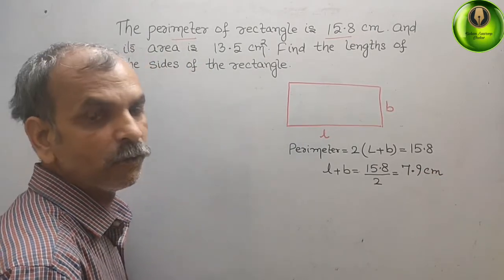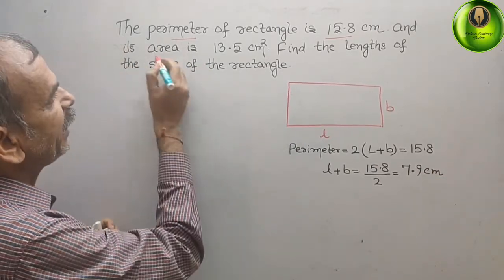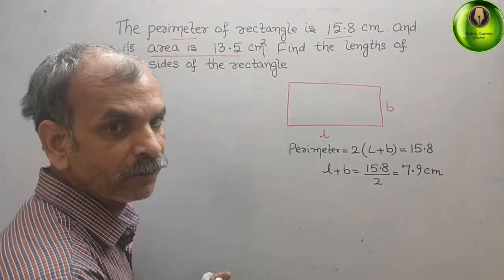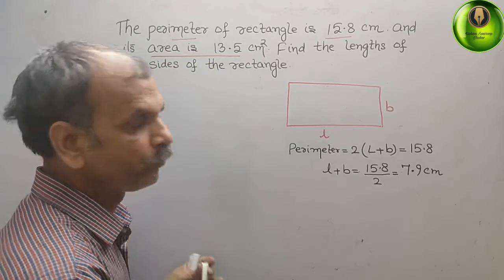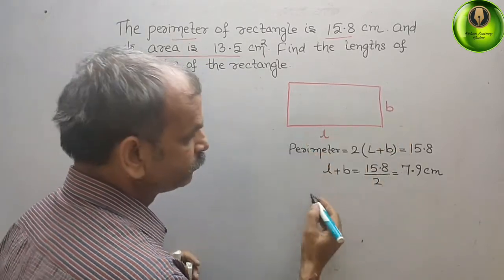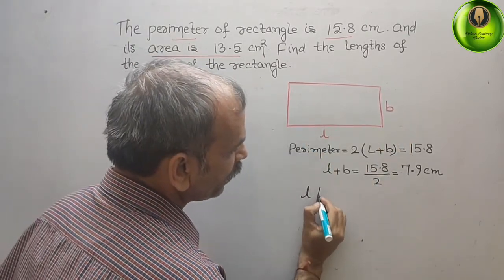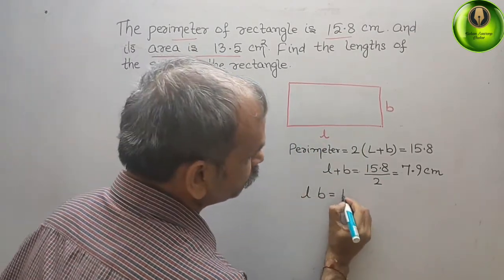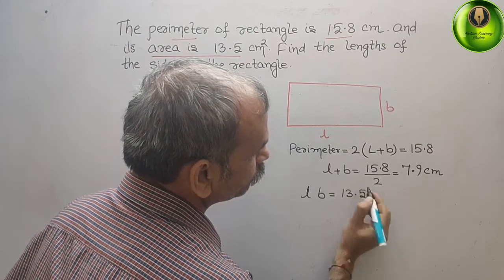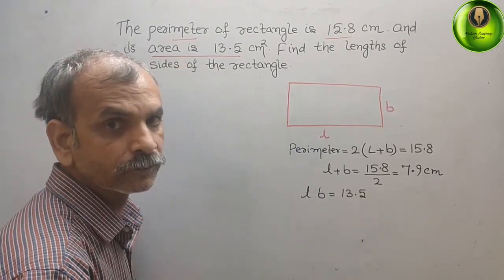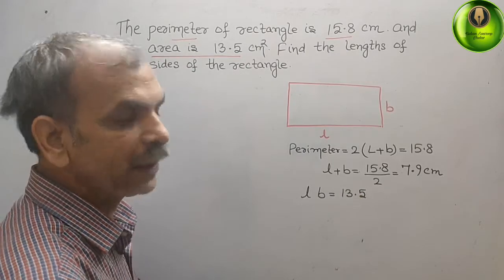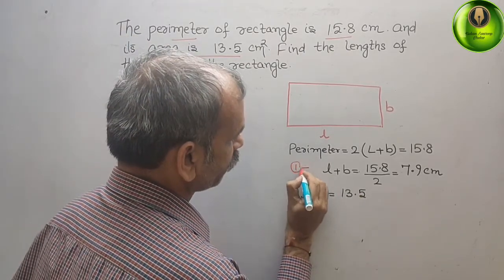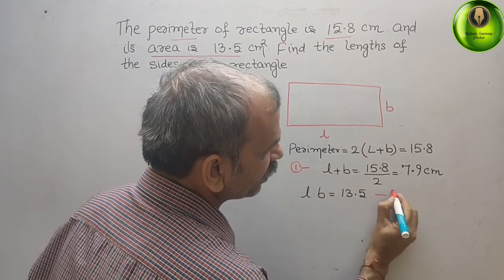Second, what they have told you? Its area is 13.5 cm. Area is what? Area is length into breadth. Now, L times B is equal to what? 13.5 cm. Now, so you will get two equations. First equation is this. And second equation is this.